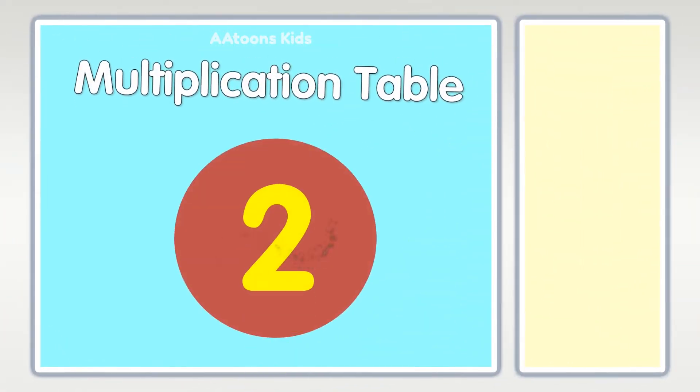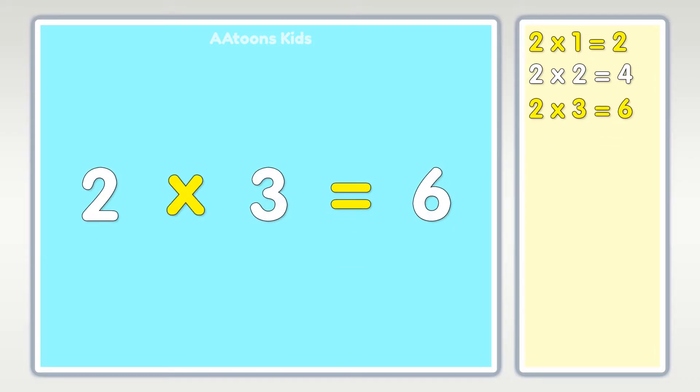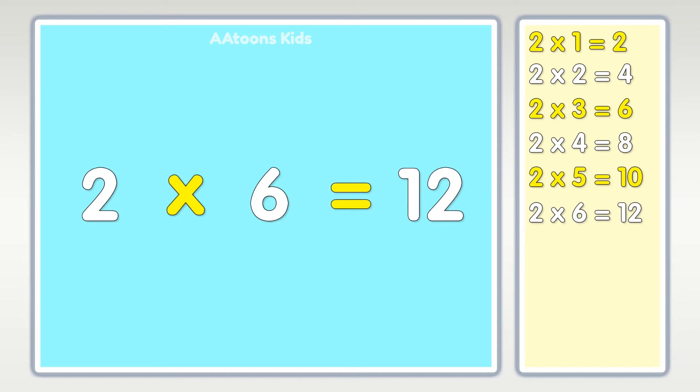Table of two: two times one is two, two times two is four, two times three is six, two times four is eight, two times five is ten, two times six is twelve.